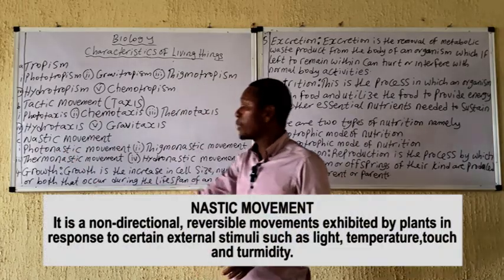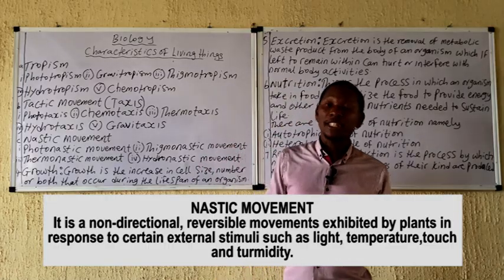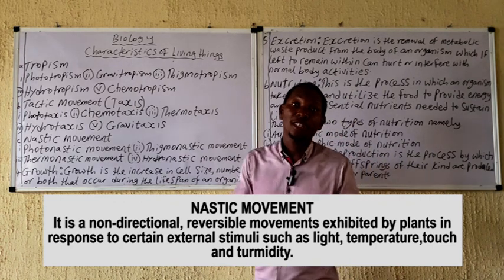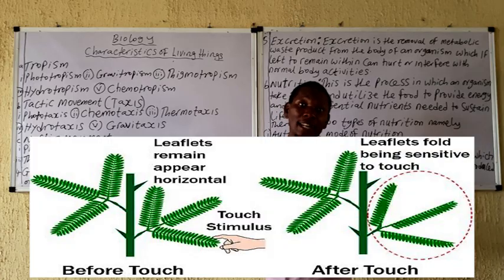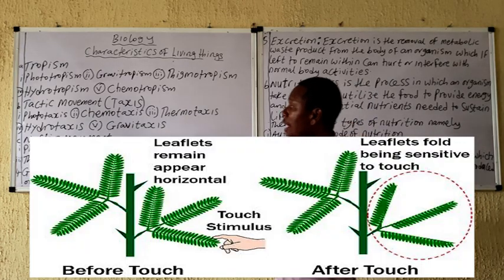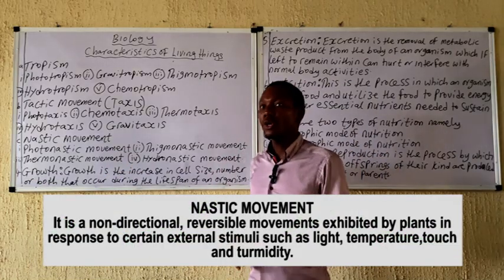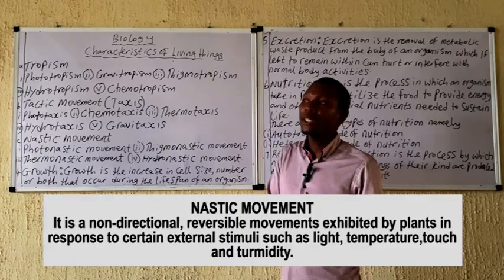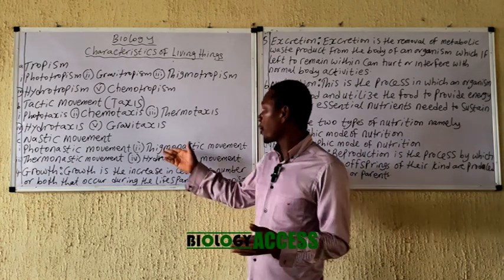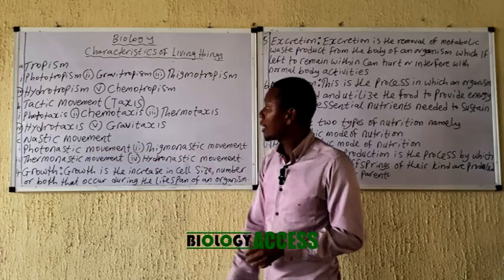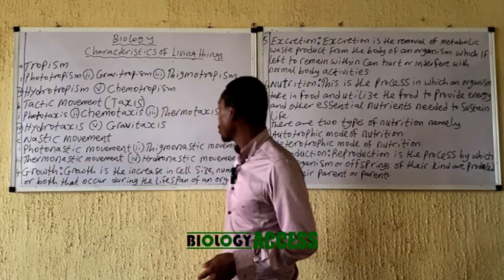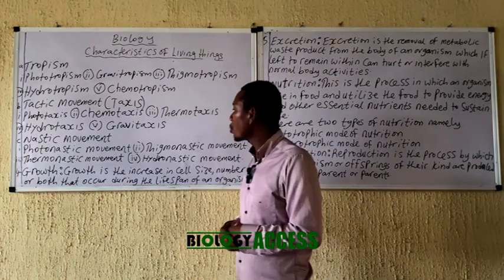The next type of response is nastic movement, which is a non-directional response towards a non-directional stimuli. A simple illustration is the plant called 'touch me not' — you push the leaf and it closes, regardless of the direction the stimuli is coming from, and the response is not related to the direction of the stimuli. There are various forms of nastic movement: photo-nastic movement, thigmo-nastic, photo meaning light, thermo meaning temperature, and hydro meaning water.